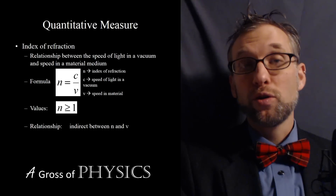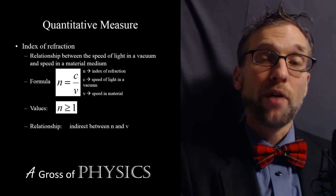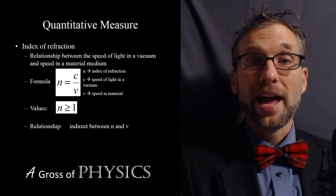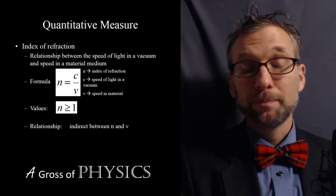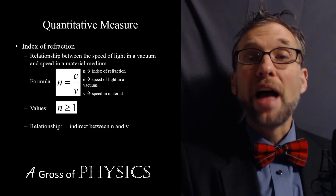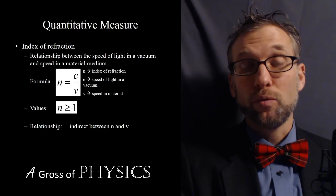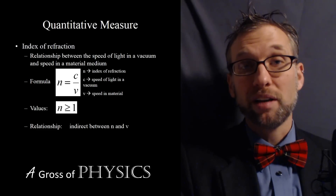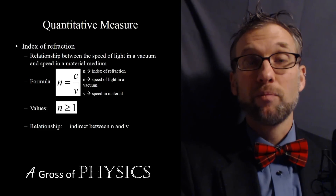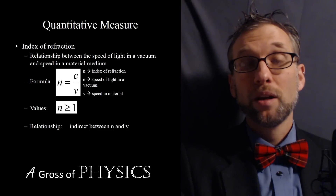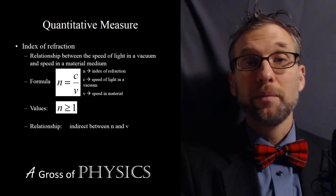The two speeds have the same unit, so they're going to cancel out. The index of refraction is going to have no unit — it's just going to be a number. If we have the speed of light in a vacuum and we're traveling in a vacuum, C will be the same as V. So if you divide the number by itself, you end up with 1. The base value for the index of refraction is 1.